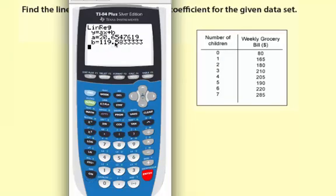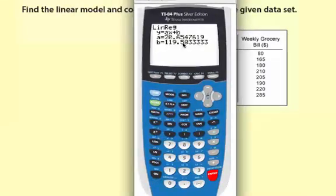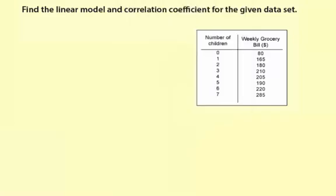And for b, you have 119.58 or 119.6. You can use your judgment here as far as the rounding goes. There's no real specification. So I'm going to say 20.7x plus 119.6. So there's the linear model.